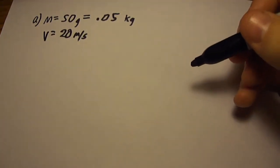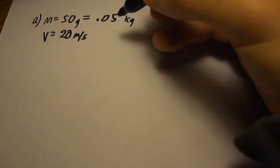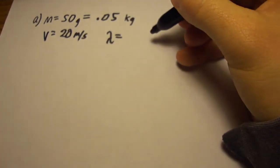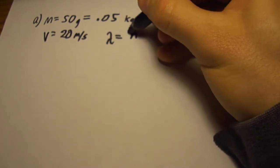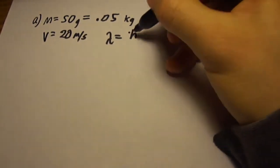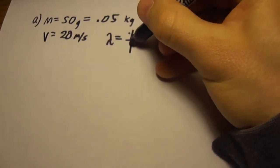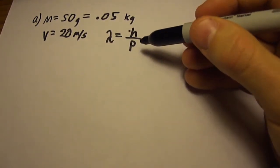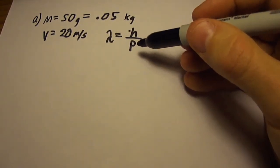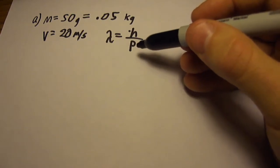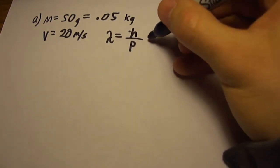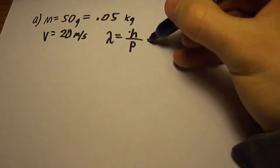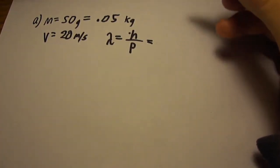To calculate the de Broglie wavelength, we know the equation is Planck's constant over momentum. Now we're not given momentum directly, but we can solve for it using the linear momentum equation, which is simply the mass multiplied by the velocity, mv.